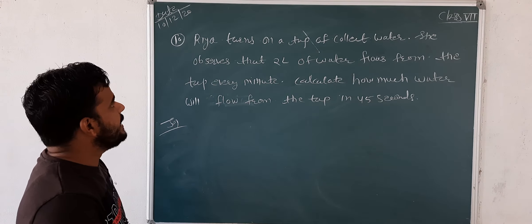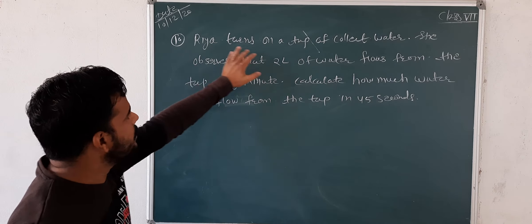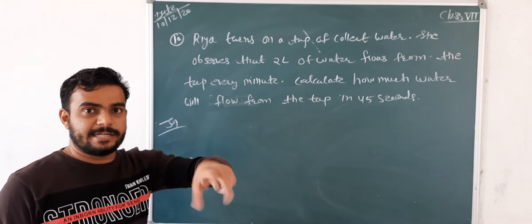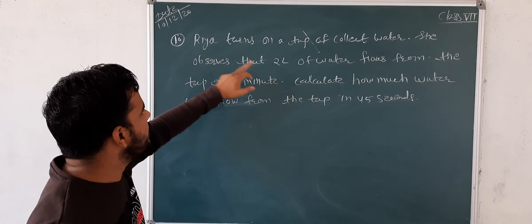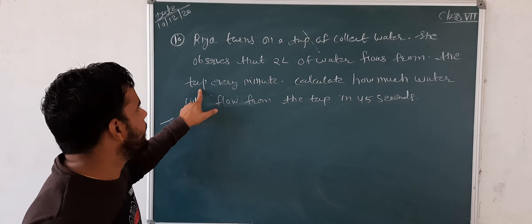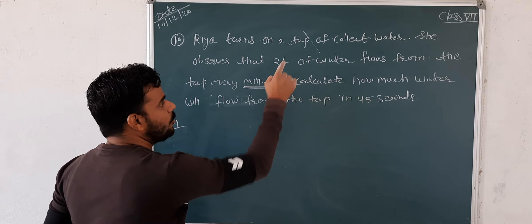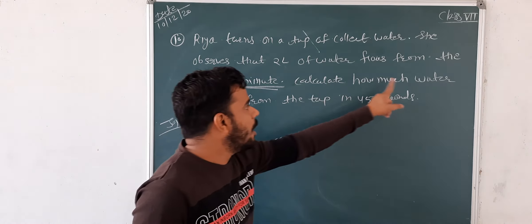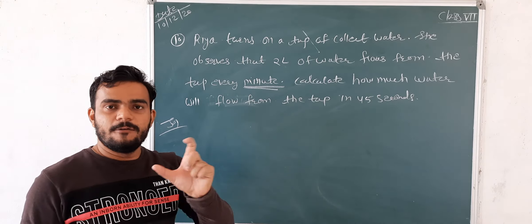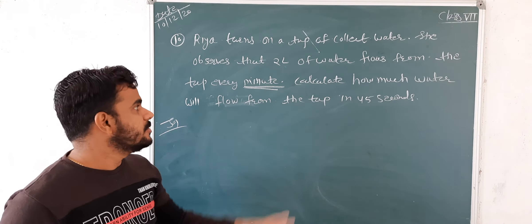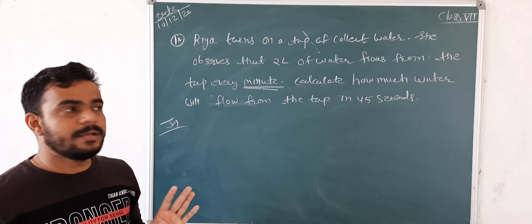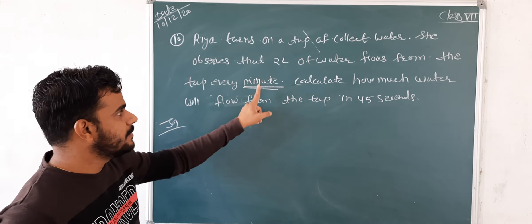The 10th question: Riya turns on a tap to collect water. She observes that 2 litres of water flows from the tap every minute. How much water will flow from the tap in 45 seconds? This is in minutes and that is in seconds, so first we have to change the time units.